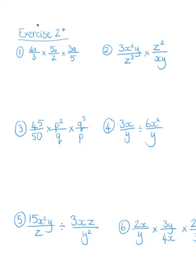Hello lovely ones, let's go through exercise 2 star from topic 3, starting with question 1. What makes it interesting is that we've got 3 fractions being multiplied by each other. Don't let that overwhelm you — we're first going to see if we can simplify by cancelling before doing anything else. We know 2 can go into 4, leaving 2 and 1. Then we've got a, a, a — lots of a's with no a's at the bottom to cancel. We can cancel 5 with 5, and 3 with 3.